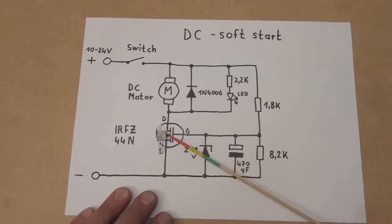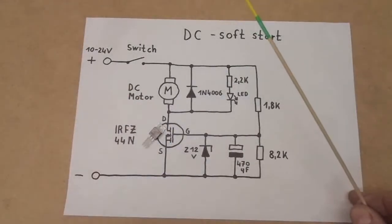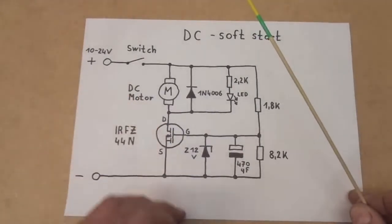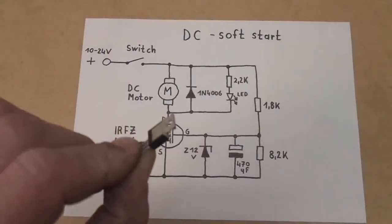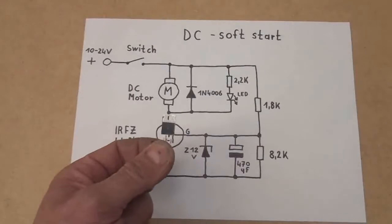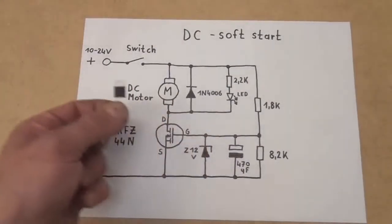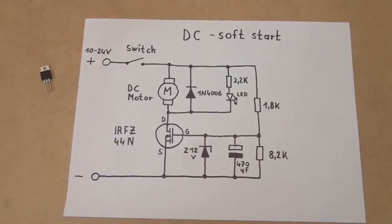If you need more than that you could theoretically add a second or a third transistor in parallel to this one to get more juice out of it. And speaking of heat sink, as I said, we are using the MOSFET in this circuit as a variable resistor so it gets hot very quickly.